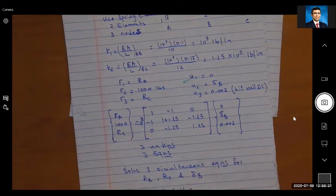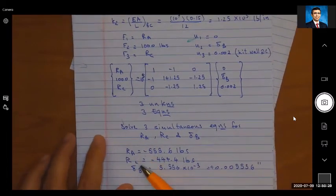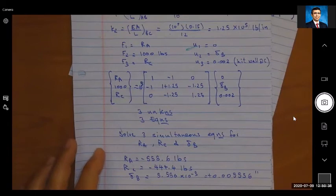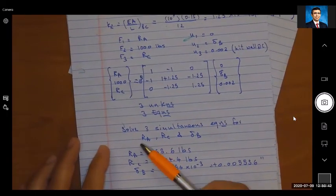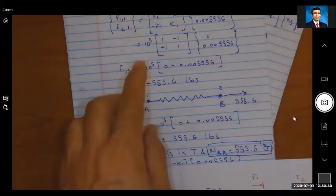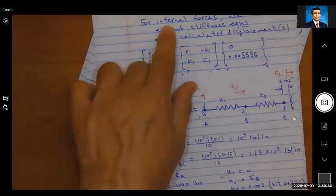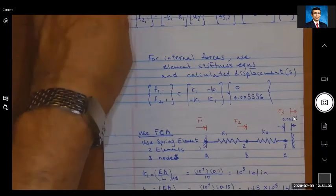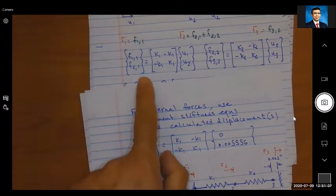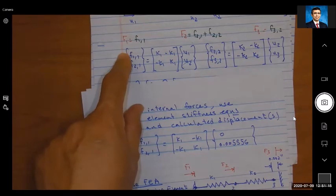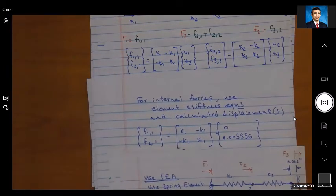Equation of rod stiffness of rod, we discussed it in the presentation. So I can use simultaneous equations to solve for Ra, Rc, and delta B. But how about the internal forces in each of these elements? I solve for the external forces and the displacements. Once I have my displacements, I can use the element stiffness equations. For internal forces, use the element stiffness equations and the calculated displacement. You remember the element stiffness equations were here? These are element stiffness equations. So if I know u1, u2, and I know my case, I can find my internal forces.